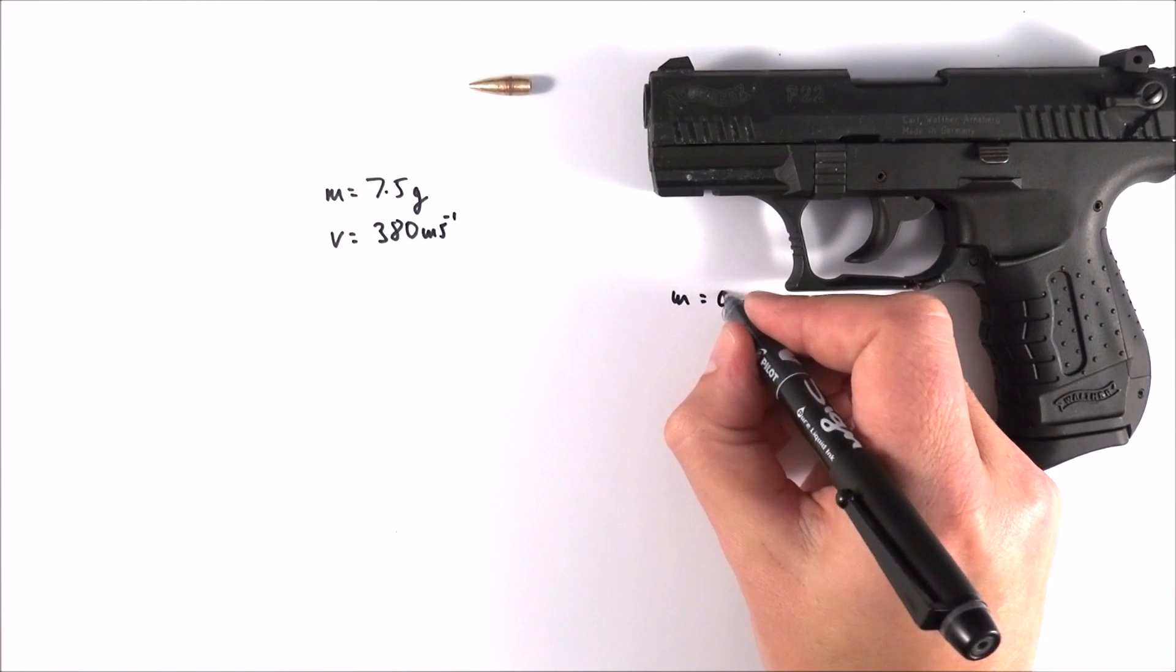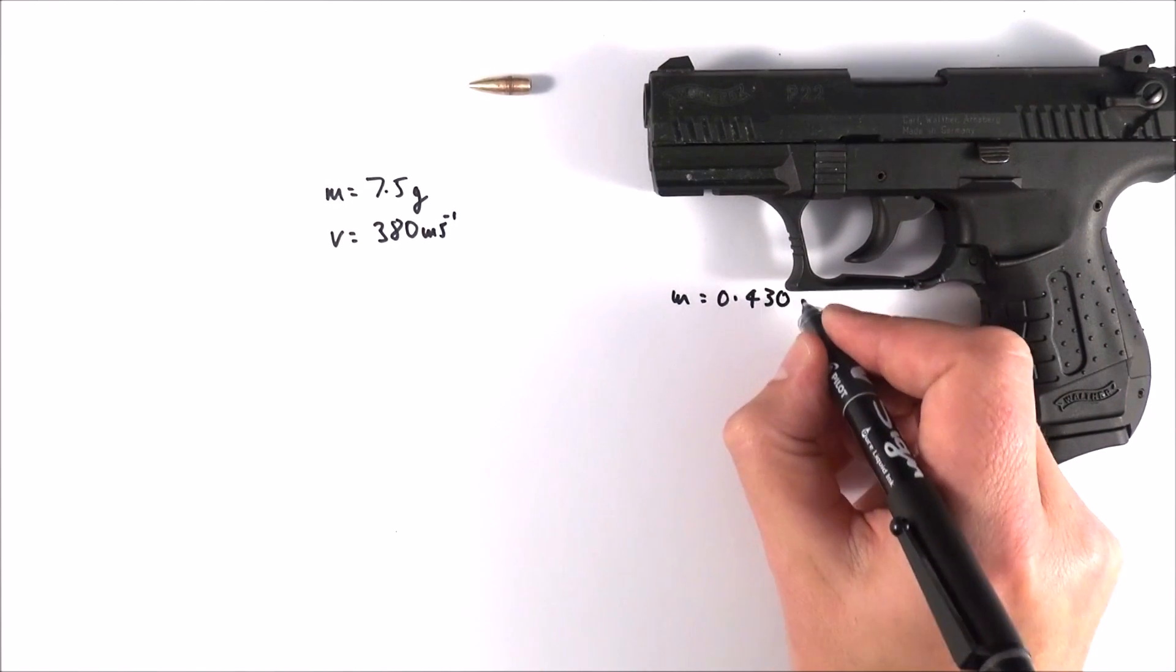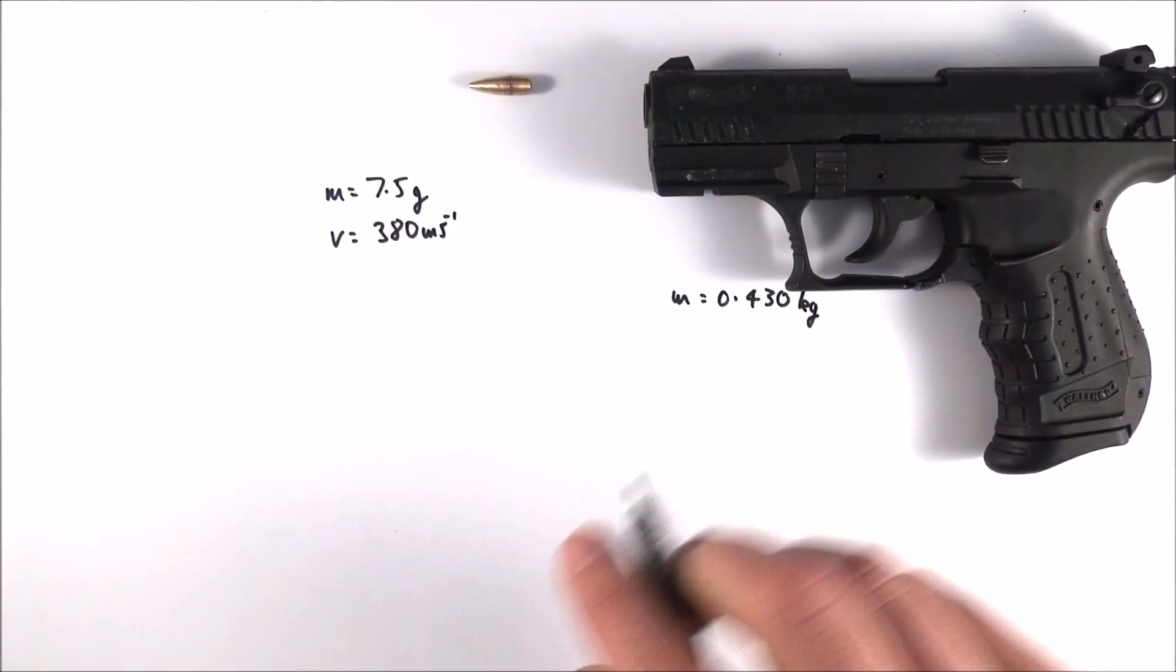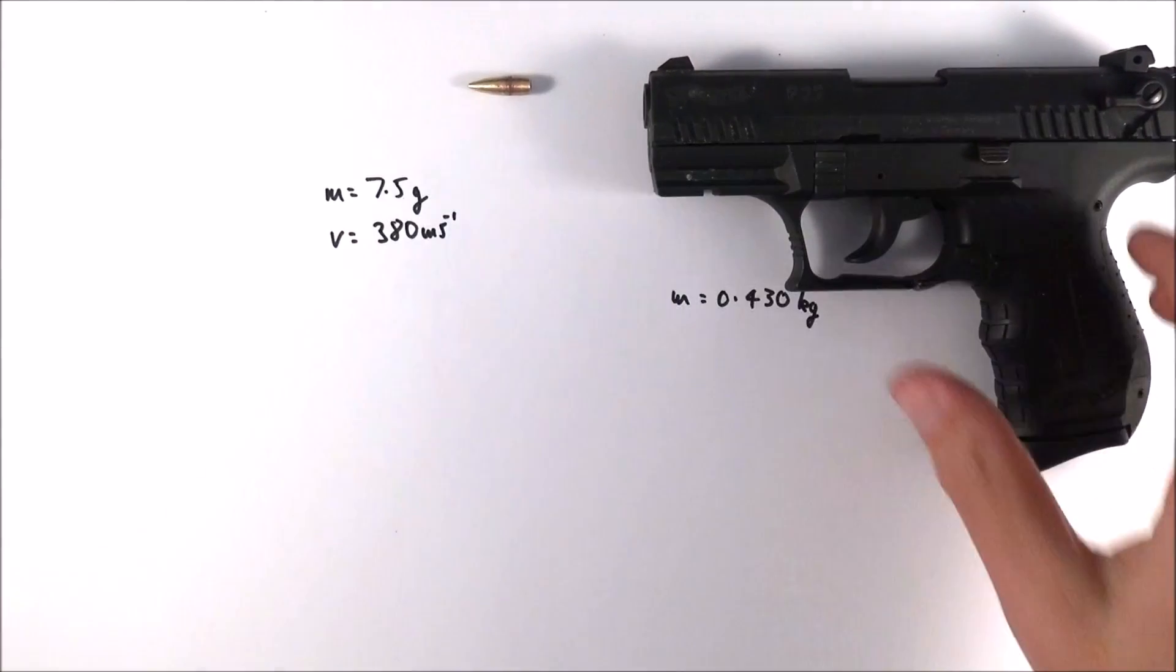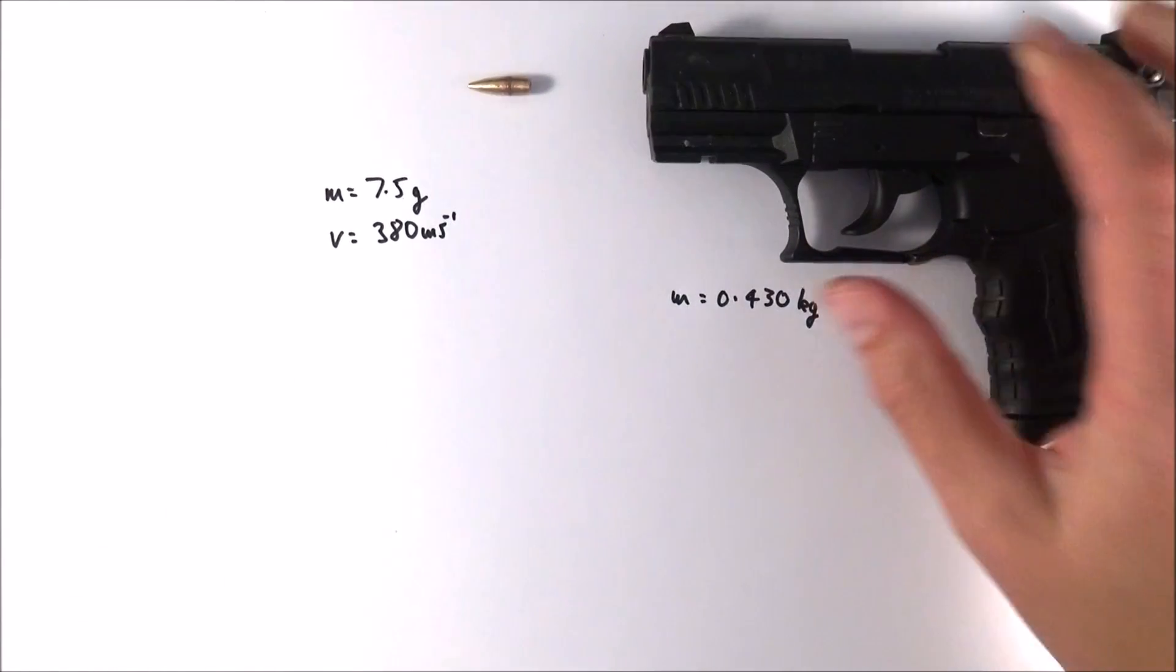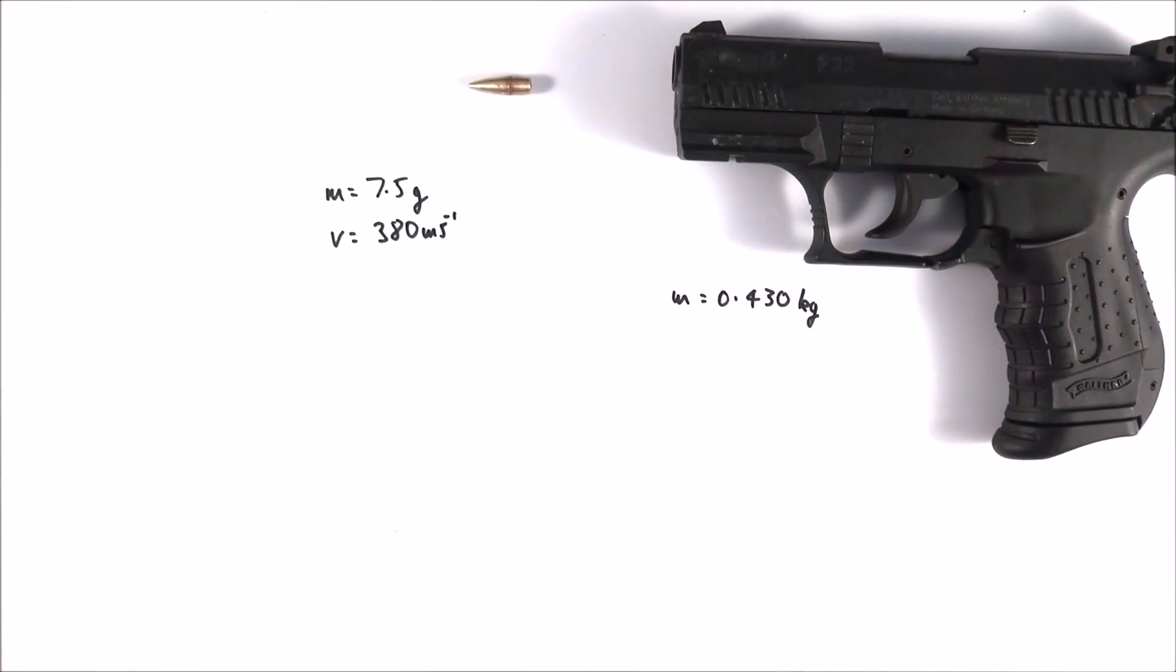This weapon here has got a mass of about 0.430 kilograms, and with this information we can work out how quickly this pistol recoils when it's fired.